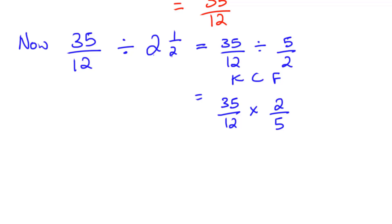Are there any common factors that I'm seeing here? Yeah, there is. Five can go into both five and 35. Five into five is one and five into 35 is seven. Likewise, two can go into two and 12. Two into two is one and two into 12 is six.